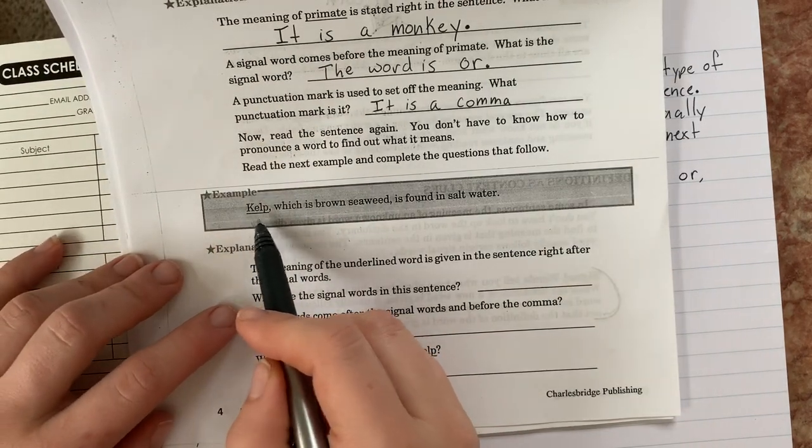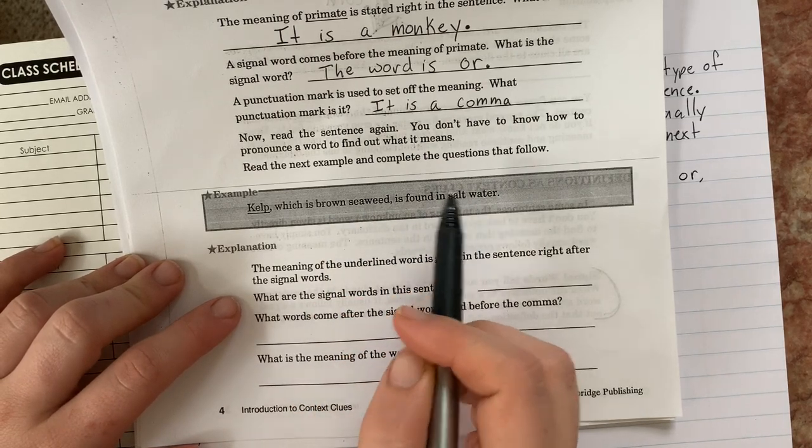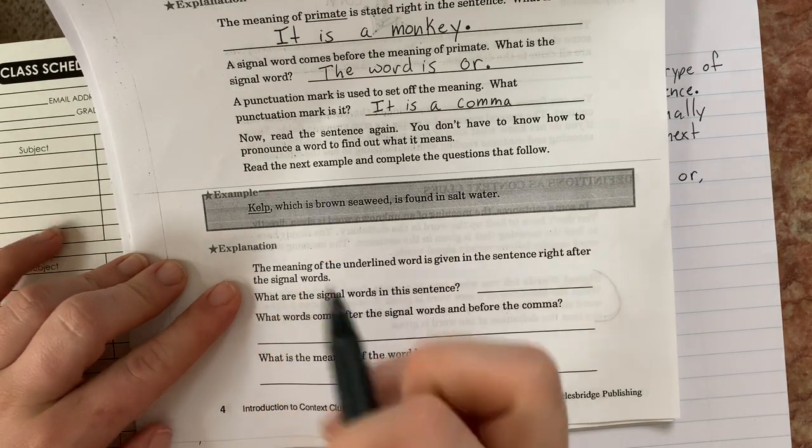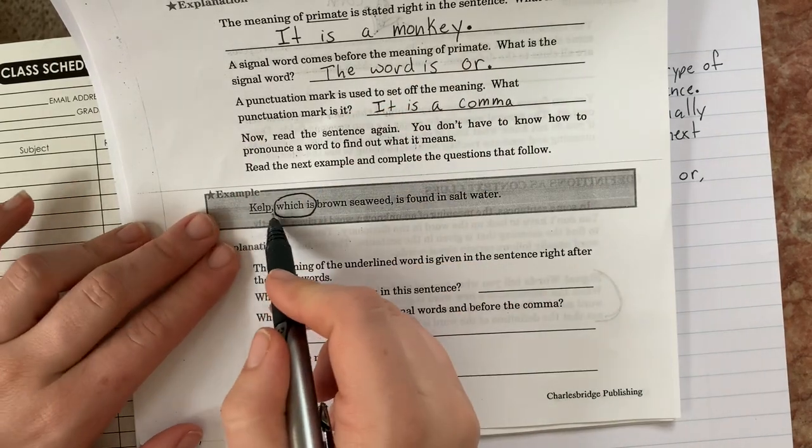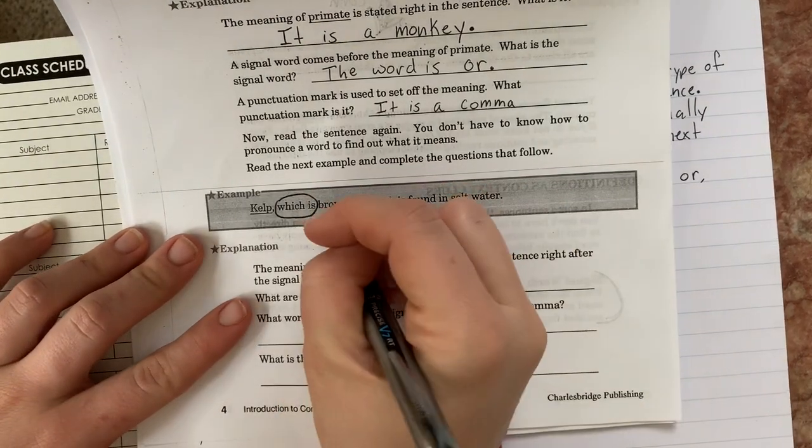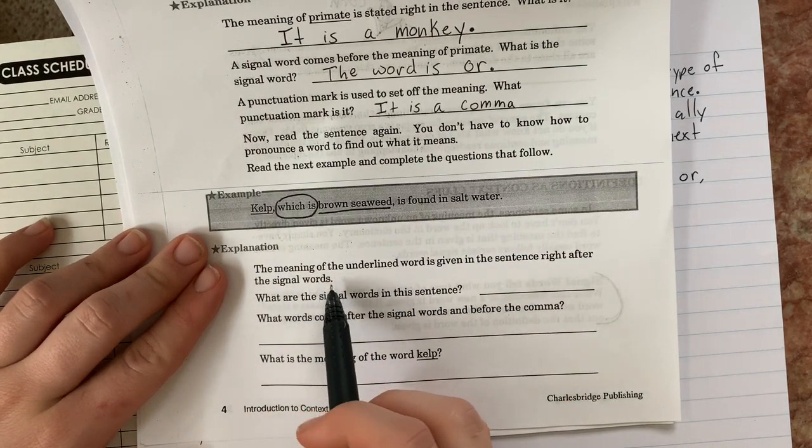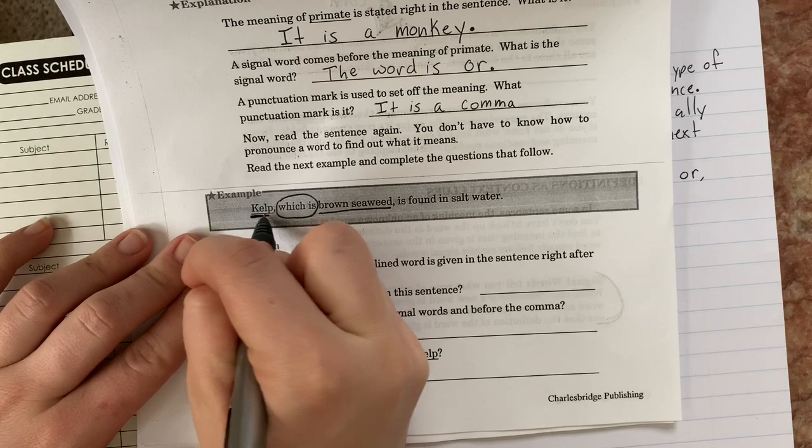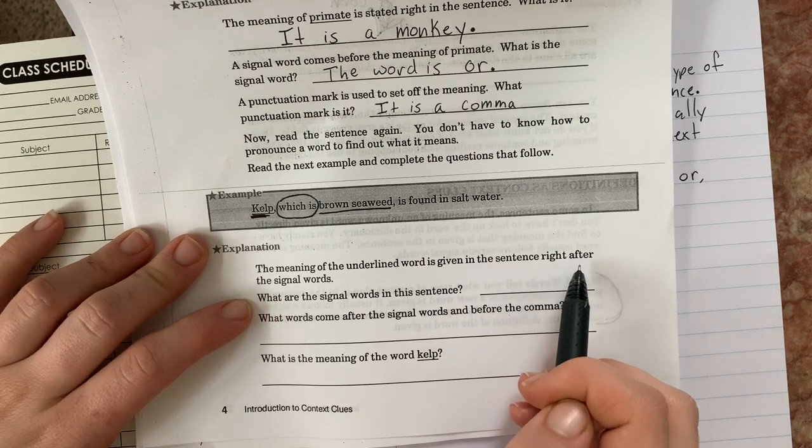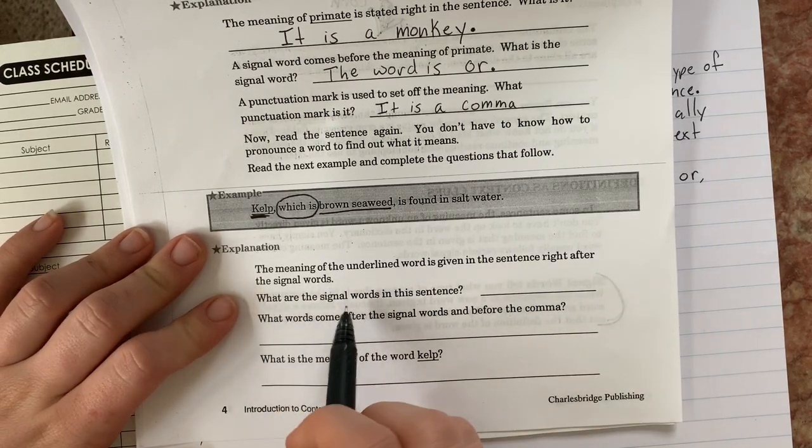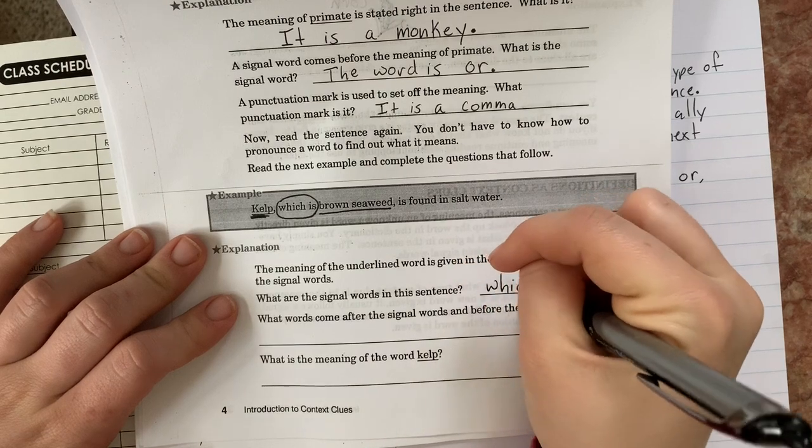All right. Let's go to our next question. Example. Kelp, which is brown seaweed, is found in salt water. Kelp. And then they have which is. Which is was one of our definition signal words. All right. So kelp, comma, which is brown seaweed. Oh, so kelp is a type of brown seaweed. The meaning of the underlined word, which right here was kelp, the meaning of the underlined word is given in the sentence right after the signal words. What are the signal words in this sentence? They don't give me a lot of space here, so I'm just going to write it. Which is. Not enough room for a sentence there.